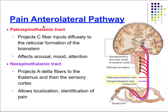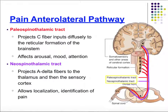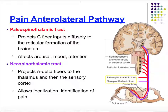Looking at the anterolateral tract: C fibers — our slow pain fibers — go up the paleospinothalamic, and A delta fibers — our large fast pain fibers — go up the neospinothalamic. The paleospinothalamic also goes to the RAS (reticular activating formation), stimulating arousal and attention to the pain. The neospinothalamic goes to the thalamus and then to the somatosensory cortex, allowing us to localize and identify the pain — to really perceive it.